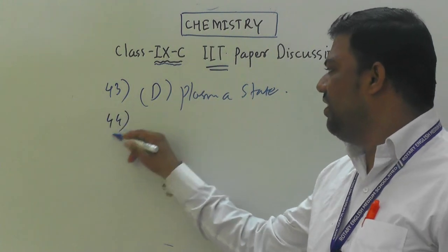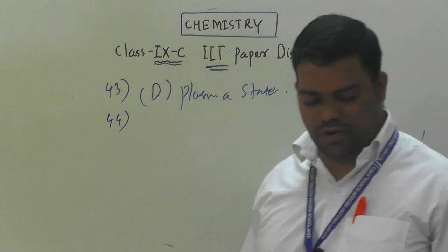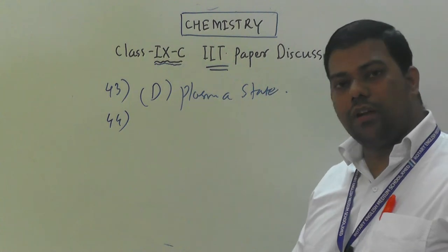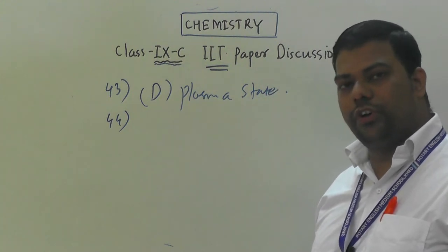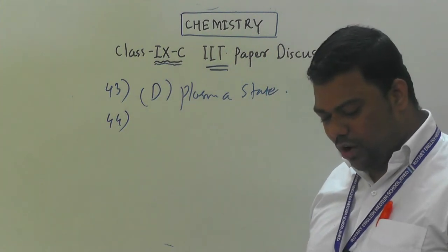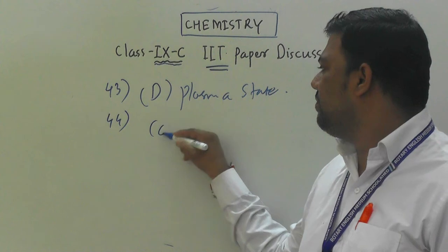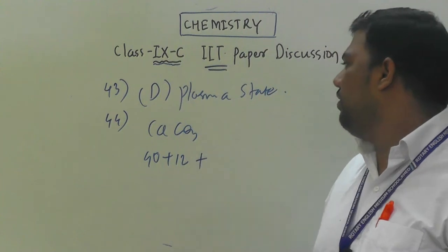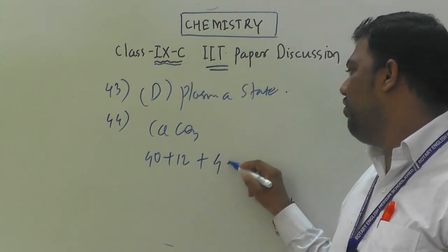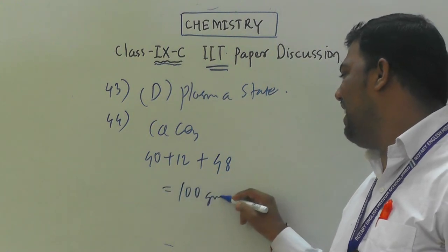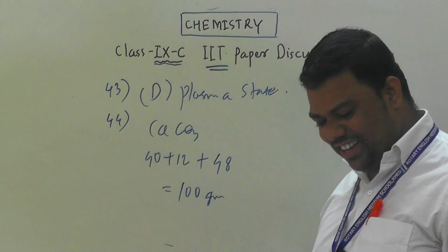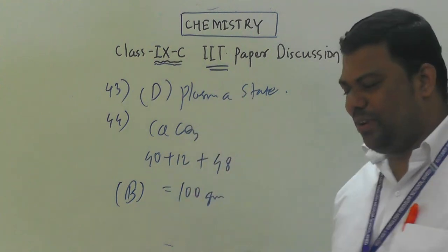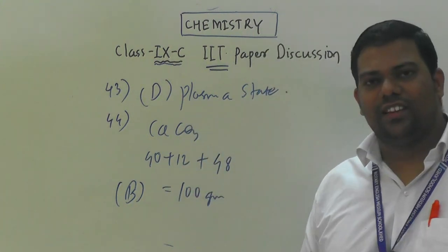Question number 44: how much weight corresponds to 6.022×10²³ molecules of calcium carbonate (CaCO₃)? The molar mass of CaCO₃: Ca = 40, C = 12, O₃ = 48, total = 100 grams. So one mole of CaCO₃ = 100 g. Option B.